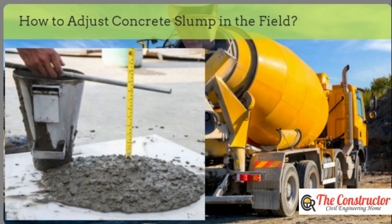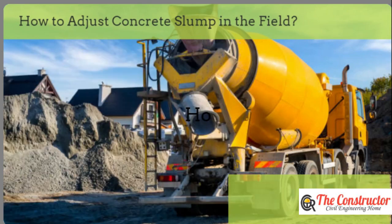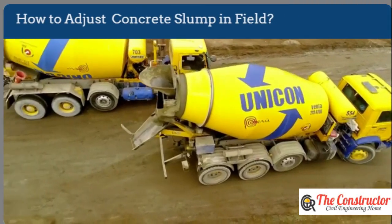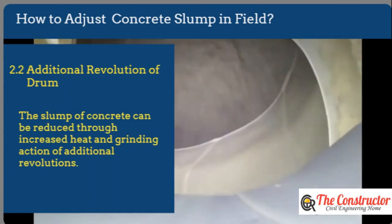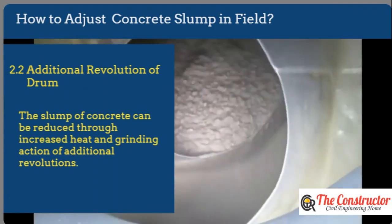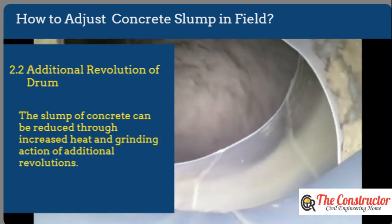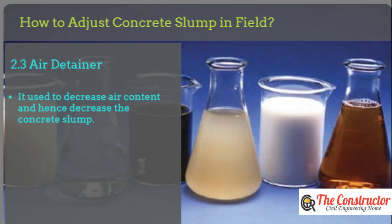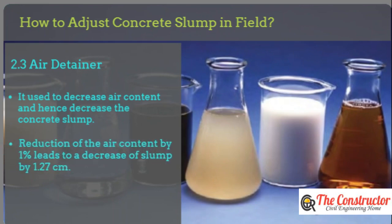When the slump of concrete is higher than the maximum acceptable range, it would be necessary to decrease it. The addition of cement can reduce the slump of concrete. The slump can also be reduced through increased heat and grinding action of additional revolutions, but its effectiveness is questionable and requires a long time. An air detrainer may be used to decrease air content and hence decrease the concrete slump. It is reported that a reduction of air content by 1% leads to a decrease of slump by 1.27 centimeters. Concrete with high air content is usually sent back to the concrete batching plant.